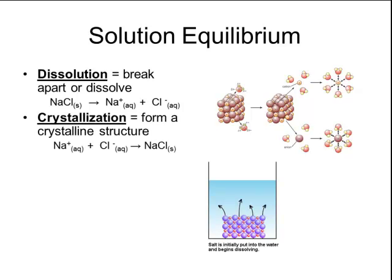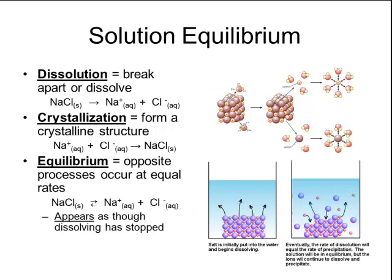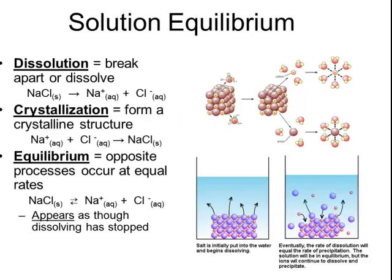At first, the only thing that occurs is dissolution. But eventually, crystallization will begin to form as well. Crystallization is just the opposite process — it occurs when the ions collide to form a crystalline structure. Eventually, the two processes will occur at equal rates.